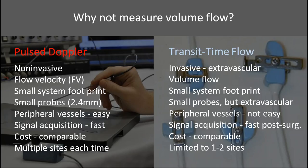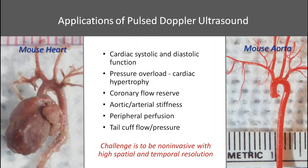What can we do with Pulse Doppler? We can study cardiac systolic and diastolic function, pressure overload models, coronary flow reserve and myocardial perfusion in various disease conditions, aortic stiffness, and peripheral vascular disease or function in ischemic models such as hind limb ischemia. There is also a tail cuff application I'll briefly discuss. The key requirement is to be non-invasive, and because of the small size of these animals we need high spatial resolution, and because of higher heart rates we need high temporal resolution.